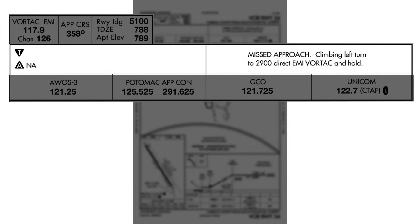You'll often also see a symbol indicating the approach lighting system for the runway. This particular runway doesn't have any approach lighting. Off to the right, we have the missed approach textual description — this is the first of three places on this approach chart that describe the missed approach procedure. You can read it right there: climbing left turn to 2,900 feet, direct to the EMI VORTAC and hold.